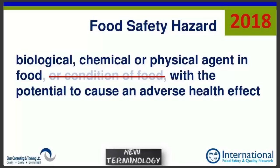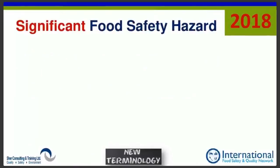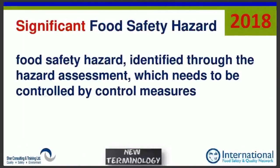A new 2018 term is 'significant food safety hazard': a food safety hazard identified through the hazard assessment which needs to be controlled by control measures. This concept was always there but didn't have a name. A risk assessment always said we must identify hazards, do an assessment, and choose which ones are significant. Now it has a name. The excitement is in the use of the word 'control measures,' which now has a new meaning.